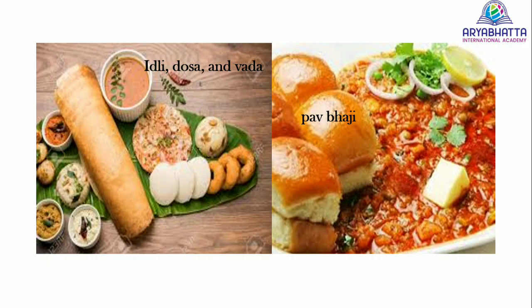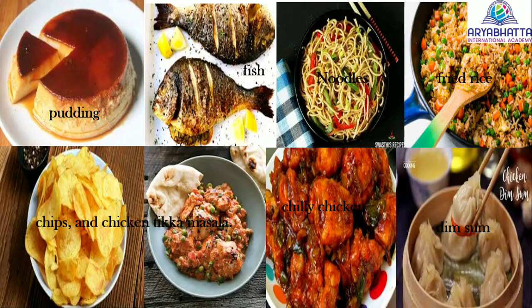Some types of food are eaten in many regions. Idli, dosa and vada are South Indian foods but they are also eaten in other regions. Similarly, pav bhaji is a West Indian dish that is popular in other regions too.